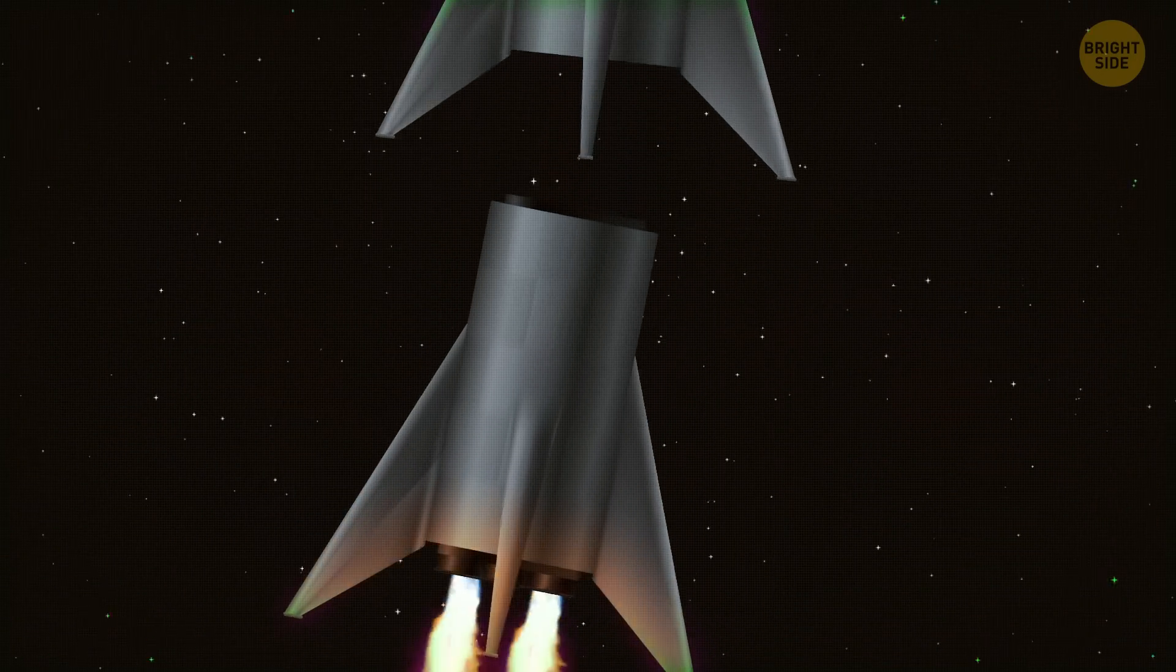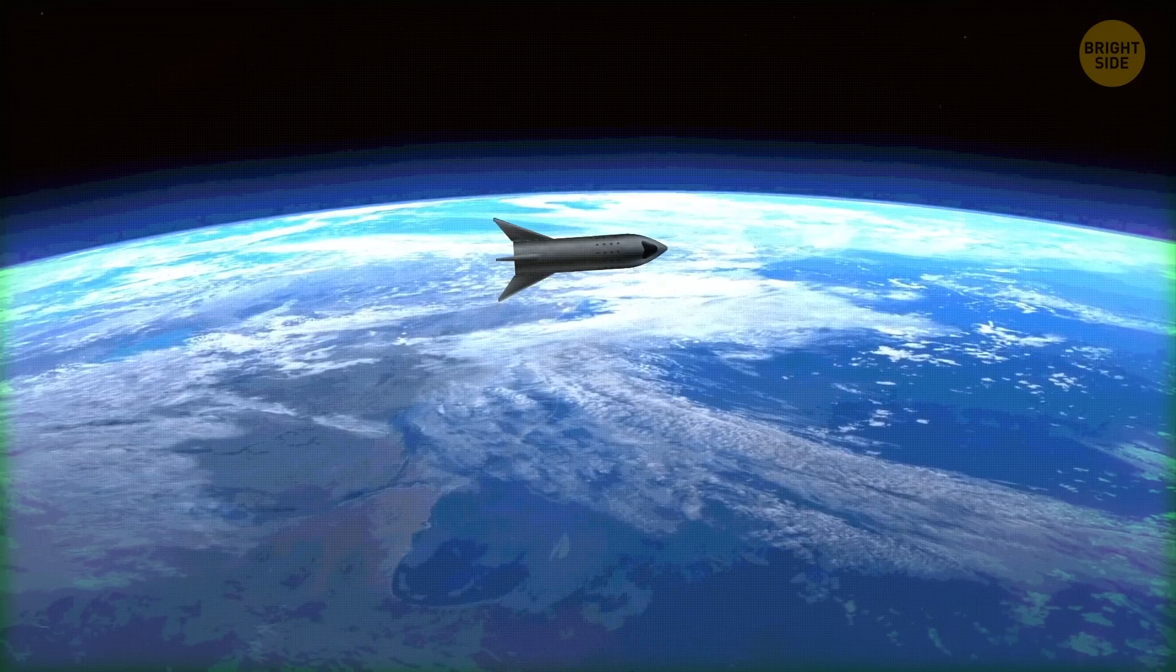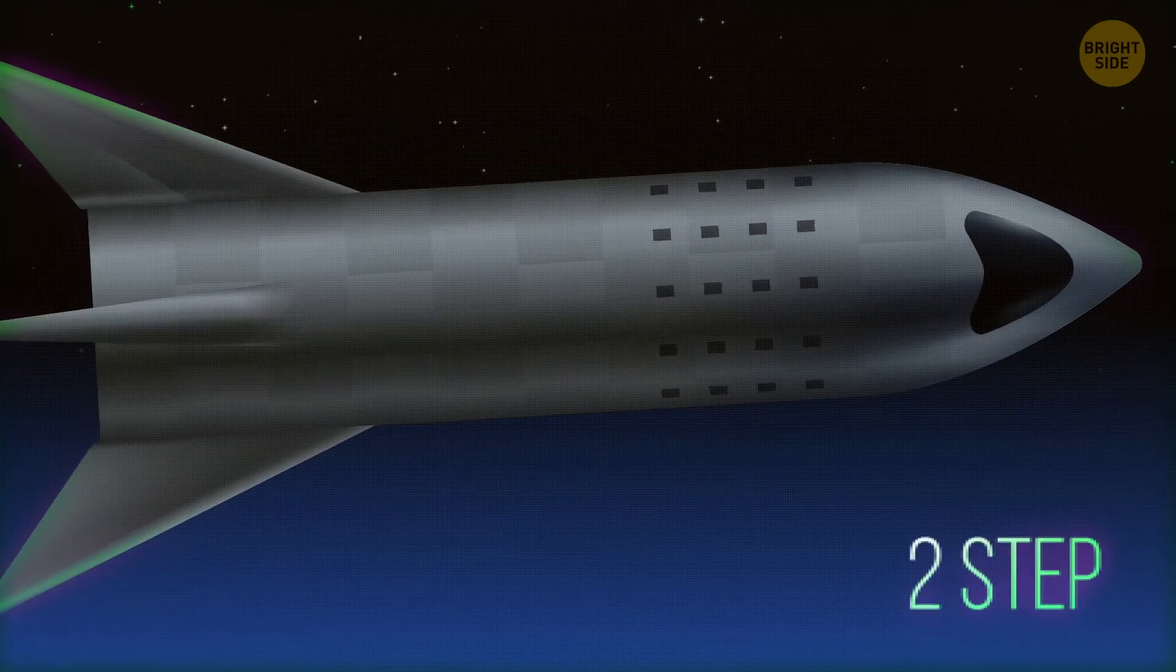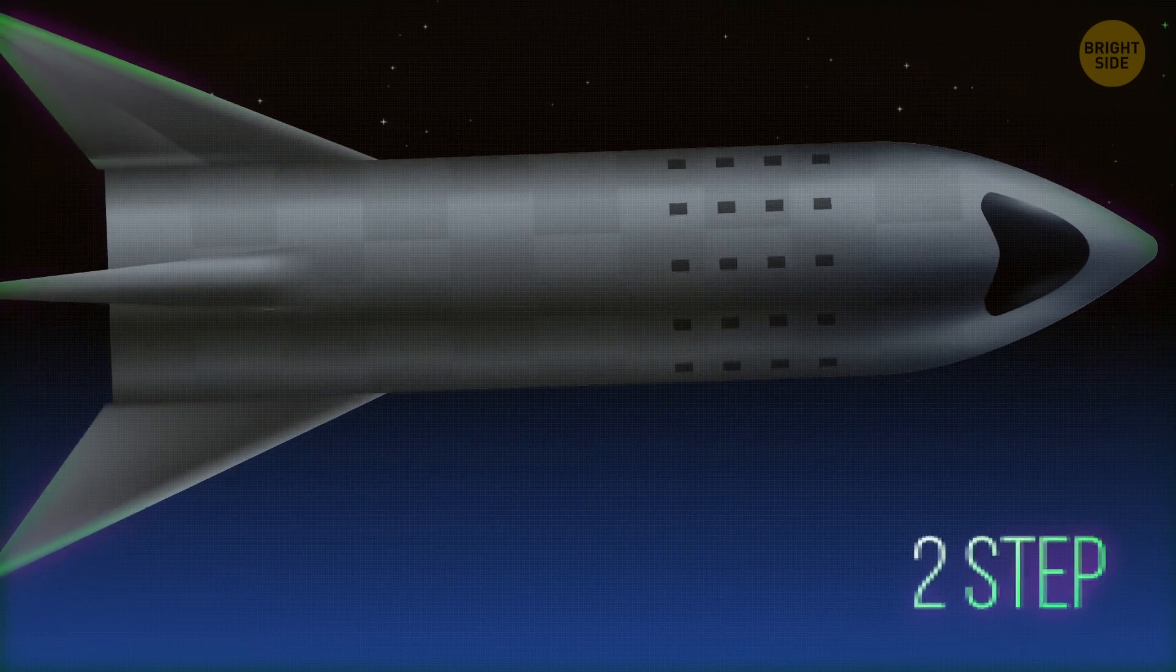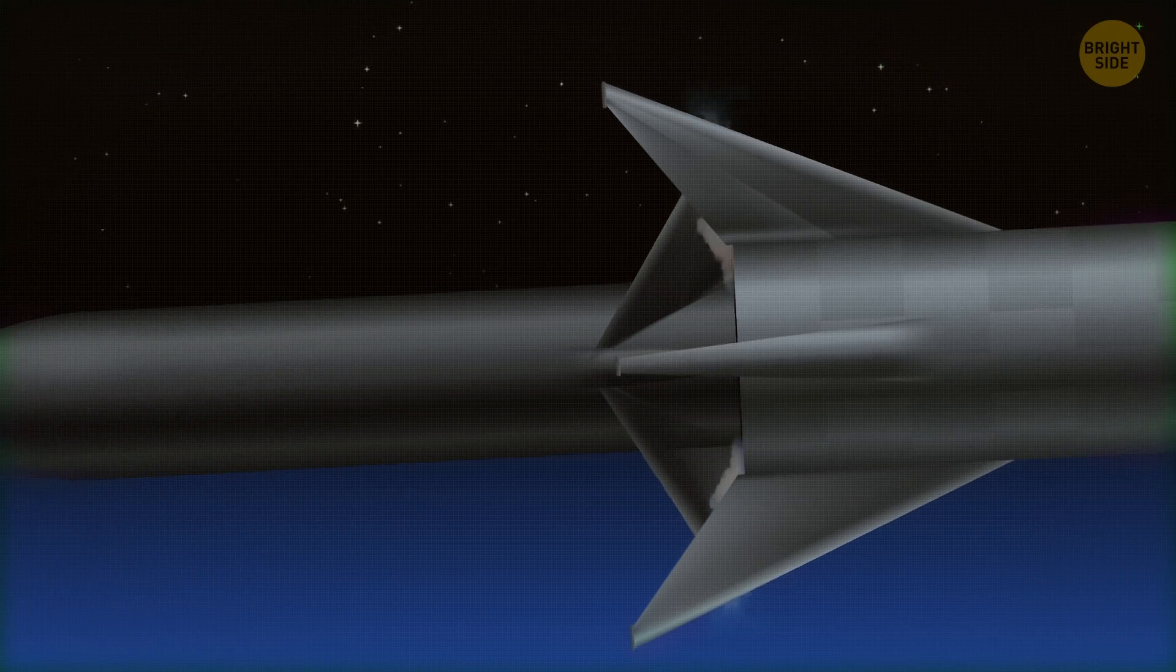At that time, Starship has to hover in orbit, having used up almost all of its fuel during takeoff. The next step is to refuel Starship right in orbit. The booster takes off again from the launch pad and carries fuel for the main spacecraft.